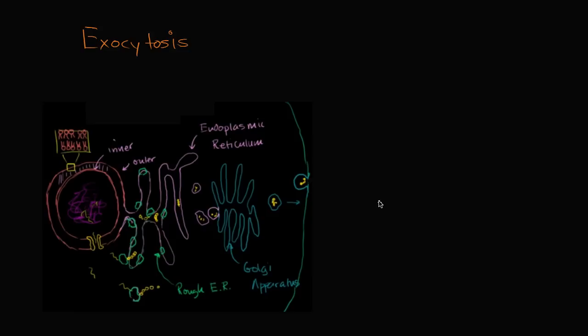And to understand how this works, and it's really the reverse of endocytosis, we're going to produce some proteins in the endoplasmic reticulum. This is our classic example. Those proteins are then going to bud off in their own little vesicles, which then merge with the Golgi apparatus, where they are further processed.